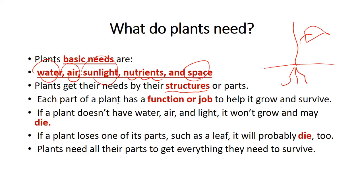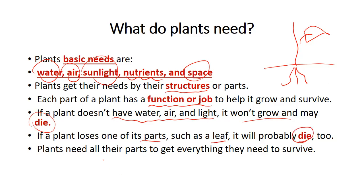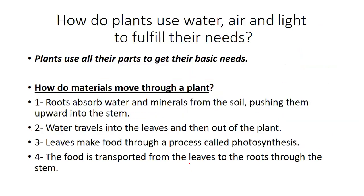Each part of a plant has a function or a job to help it grow and survive. If a plant does not have water, air, and light, it will not grow and it may die. If a plant loses one or more of its parts, such as a leaf, it will probably die too. The plants need all their parts to get everything they need to survive.